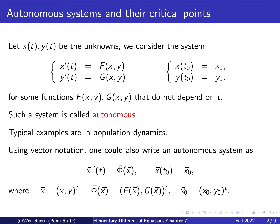We can also use vector notation to write this system in a more compact way: X vector prime equals a capital Phi vector-valued function, and the initial vector at t0 is given as X0 vector. Here X vector is just a vector consisting of the two unknowns X and Y, and Phi is a vector-valued function taking capital F and capital G as the first and second components respectively, and the initial vector collects the initial conditions X0 and Y0.